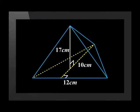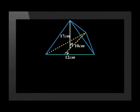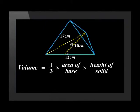Here is a triangular pyramid. Let's calculate the volume of it using the given information. We start with the formula for volume of a pyramid: a third times the area of the base times the height of the solid.